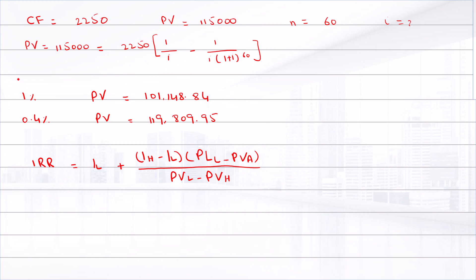1% is IH, 0.4% is IL. That is present value H and that is present value L, and 115,000 is the present value actual.